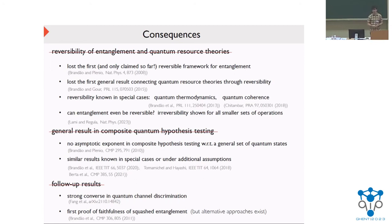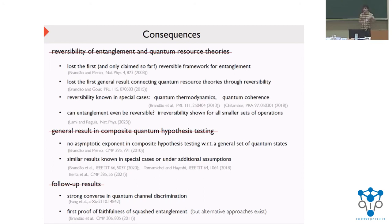[Questioner]: You mostly talked about entanglement. What are other classes of convex states for which we would have a generalized Stein's lemma? [Speaker]: We have, for example, the theory of quantum coherence, where the free states are diagonal states in some basis rather than separable states. We can show there is a Stein's lemma there. I think that's the most complicated set for which we have a Stein's lemma. Steins lemmas can be recovered in different settings and have been studied in many works, with composite results also — but the way the composite hypothesis is defined is different. If you want this operational approach, we don't really have results beyond thermodynamics and quantum coherence. Those are the only ones I know of for which we have a Stein's lemma.